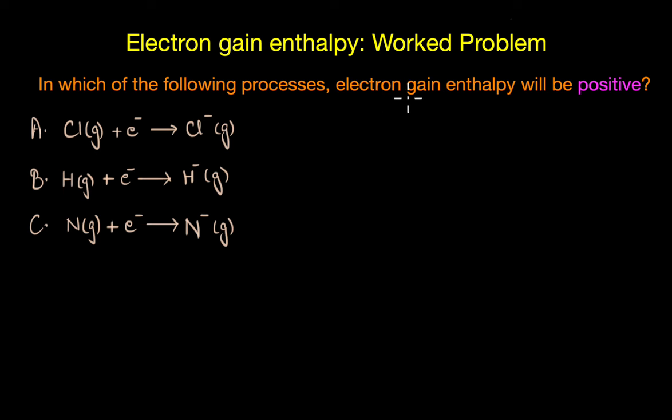Now a positive electron gain enthalpy would mean that this process of gaining an electron is not particularly favorable. It is endothermic and we need to input a lot of energy for this electron addition to take place. Now this can happen if we are moving from a more stable electronic configuration to a less stable state or if we are adding an electron to a very small atom in which case the added electron will experience a lot of repulsion from its neighboring electrons. So let's look at the electronic configurations of each of these atoms and see if adding an electron makes it more stable or less stable.